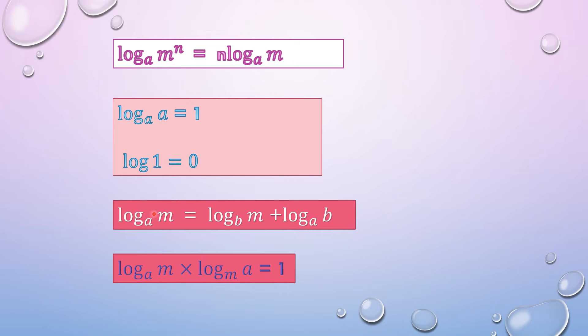How have we split it? Log of m to the base a is written as log of m to the base b, which is the new addition, plus log of b, which is the new addition, to the base a, which was originally in the question.